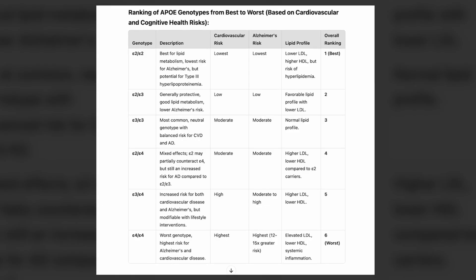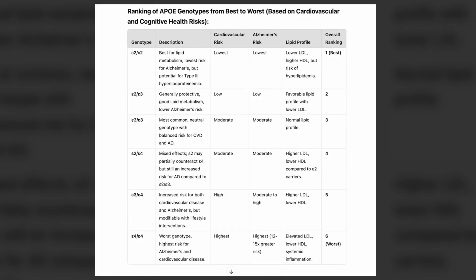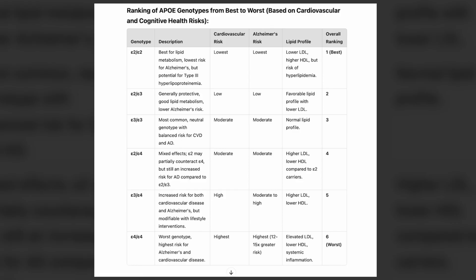If we look at those six categories and rank them from best to worst — oversimplified — E2, E2 is the best, with the best lipid metabolism and the lowest risk for Alzheimer's disease, tending to be associated with the best health outcomes. The second best is E2, E3. The most common version is E3, E3. Slightly less preferred would be E2, E4 — one good copy and one bad copy — which carries a somewhat increased risk of Alzheimer's disease compared to E2, E3.